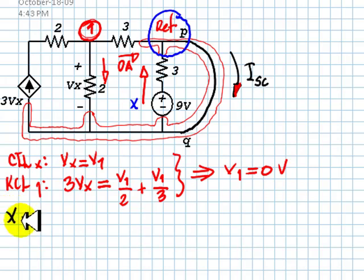that current X is 0 minus 0 plus 9, over 3, which is 3 amps.